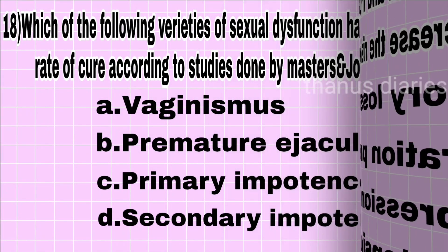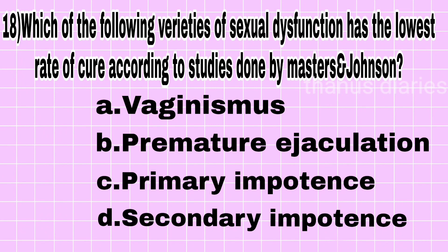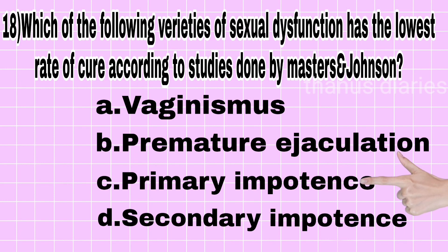Next question: which of the following varieties of sexual dysfunction has the lowest rate of cure according to studies by Masters and Johnson? Vaginismus, premature ejaculation, primary impotence, or secondary impotence? The answer is primary impotence.